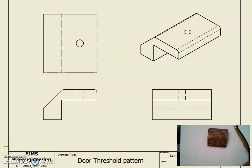Hello everyone. In this video we're going to take a few minutes to explore a technique — a part of multi-view sketching that lots of students have trouble with — and that subject is hidden lines. A hidden line is a dashed line that is used to illustrate or show an edge or a feature in an object that is hidden from view.